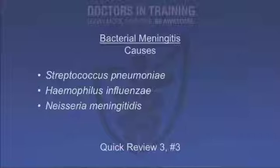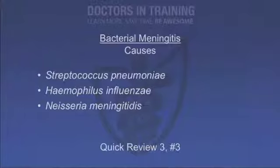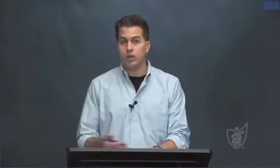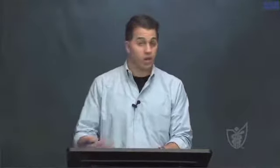Question 3: What organisms are known for causing meningitis? The three main bugs are Strep pneumoniae, Haemophilus influenzae (both type B and non-typeable), and Neisseria meningitidis. Chloramphenicol can treat these, but it is not first-line. First-line empirical treatment for bacterial meningitis is ceftriaxone.